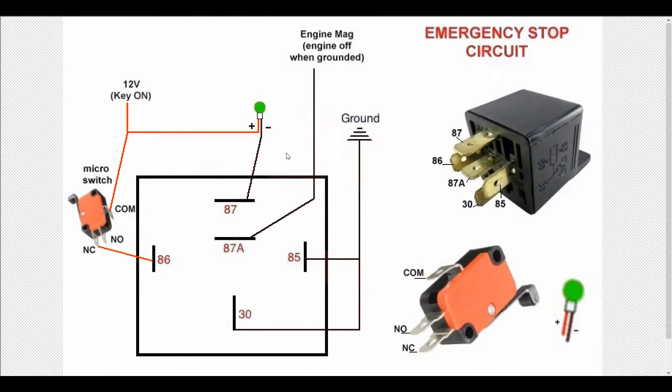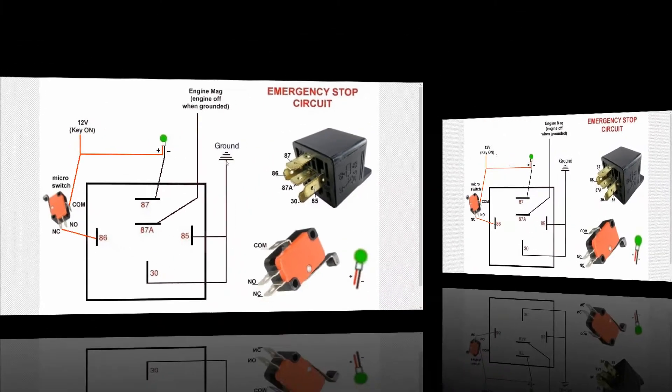And here we can take a look at the negative side of the circuit. So the first step is pin 87 from the relay needs to go to the negative wire on the bulb and then pin 87A that is going to be connected to the wire coming off the magneto on the engine and then pin number 30 and pin number 85 are going to be connected to the chassis ground.